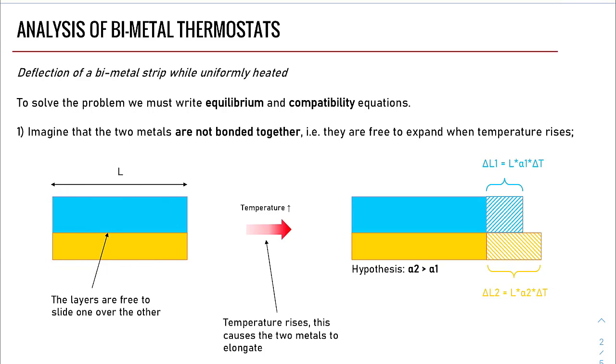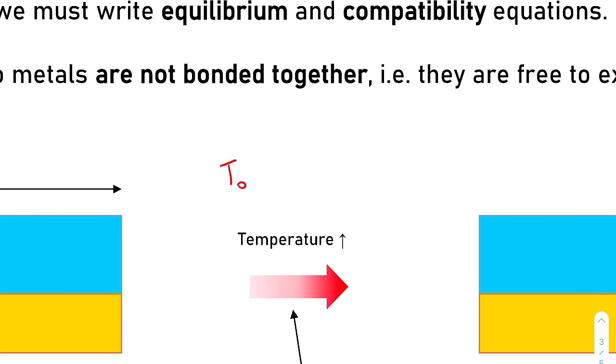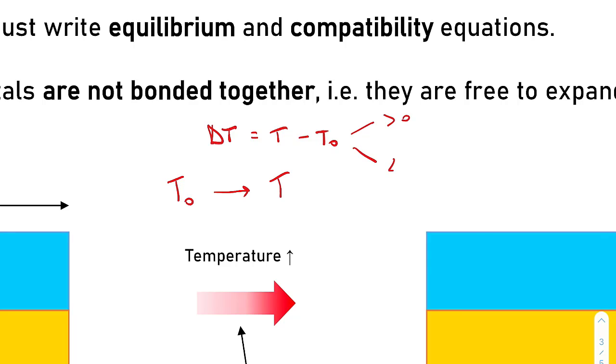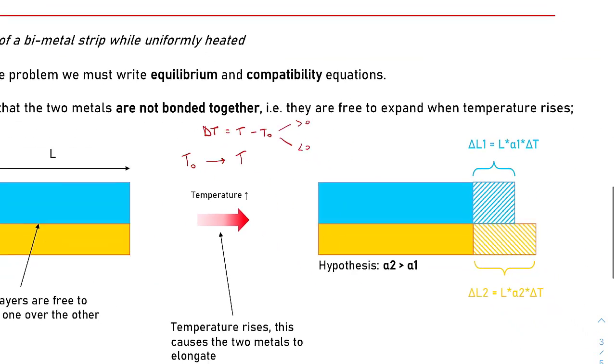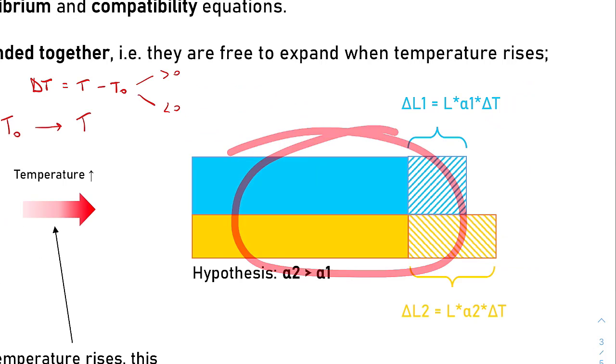Here you have the strip. In this case, we suppose that the two layers are not bonded together. So this surface does not transmit any load from one layer to the other. Imagine to have a temperature T0 and then to have a change in temperature so that it become T. You can easily compute a delta temperature, that is T minus T0. This delta temperature can be greater than zero or smaller than zero, depending on the fact you are heating or cooling your system. In this system, I made two hypotheses that do not prevent the generality of the work. The first hypothesis is to have a delta T greater than zero. The second hypothesis instead is to have alpha 2 greater than alpha 1.